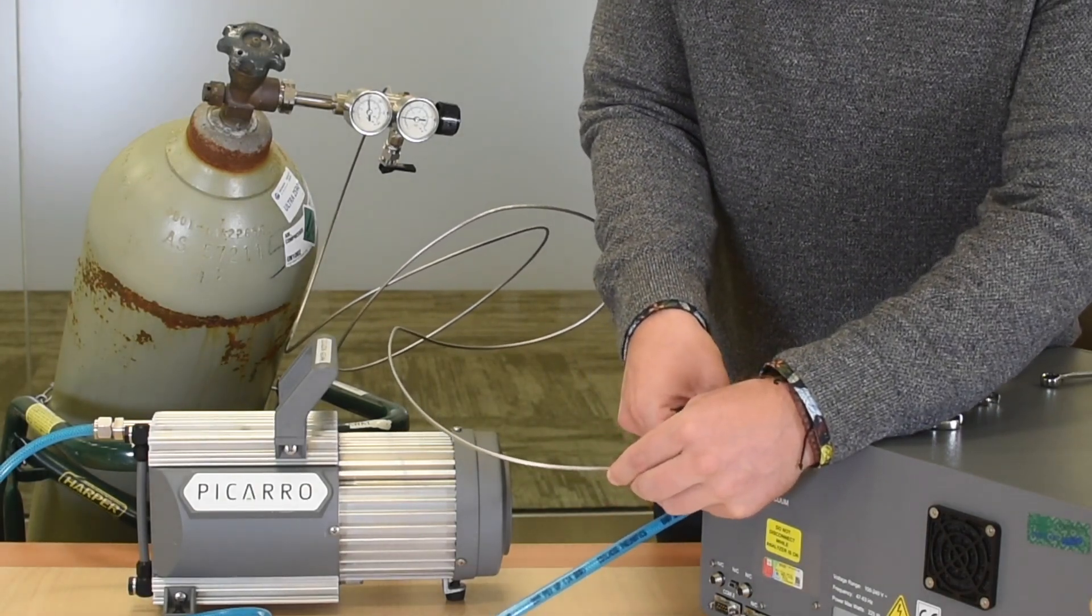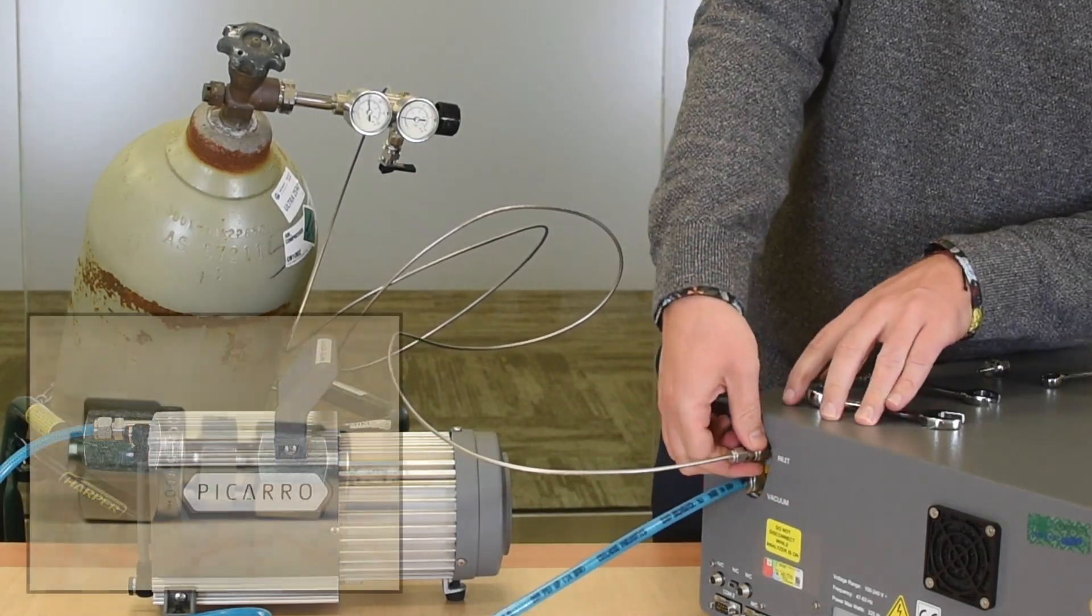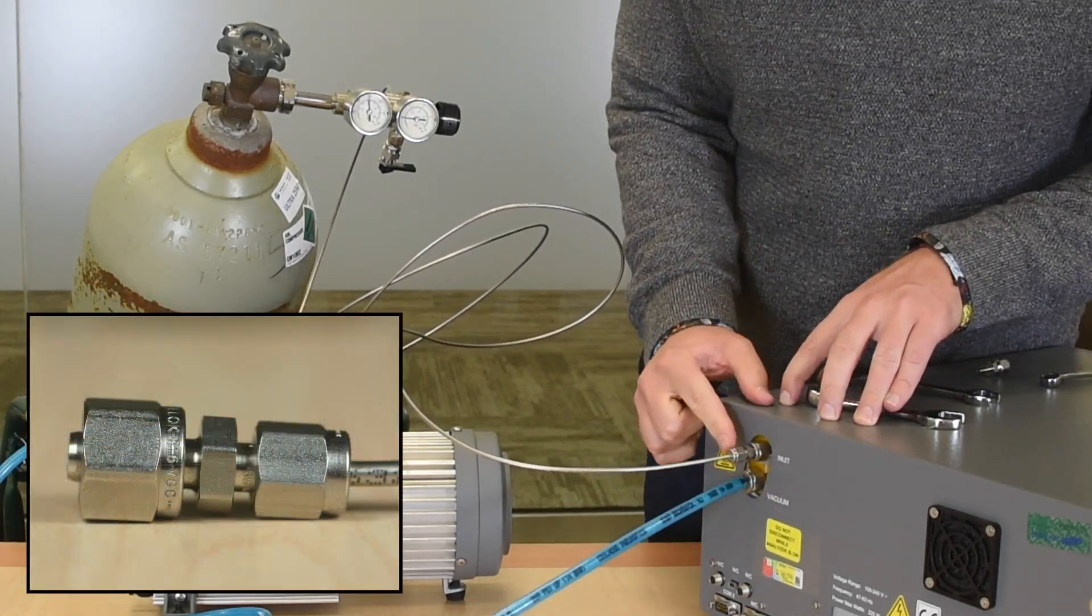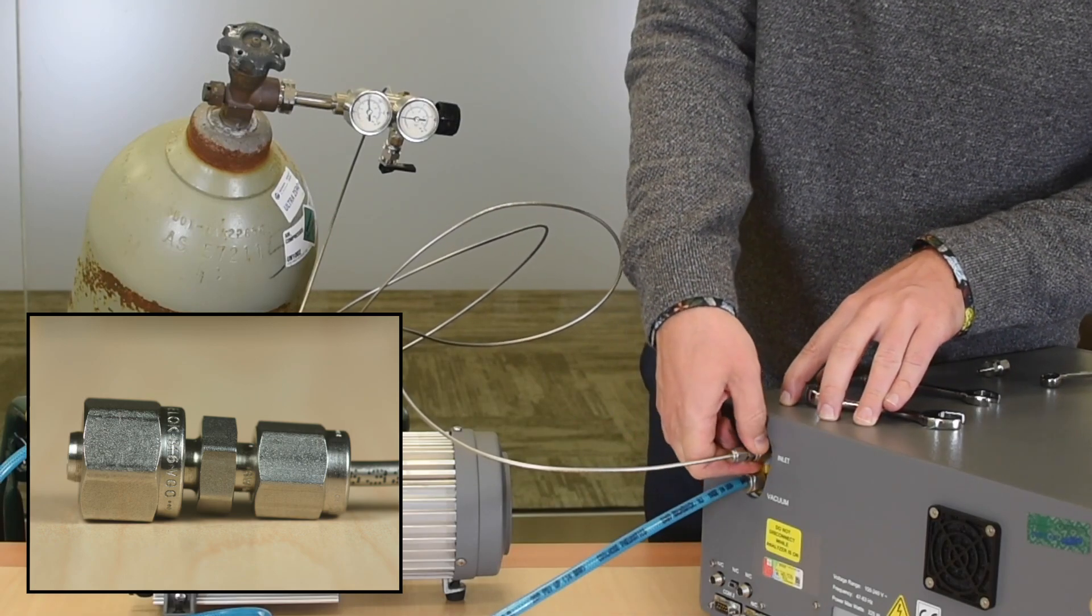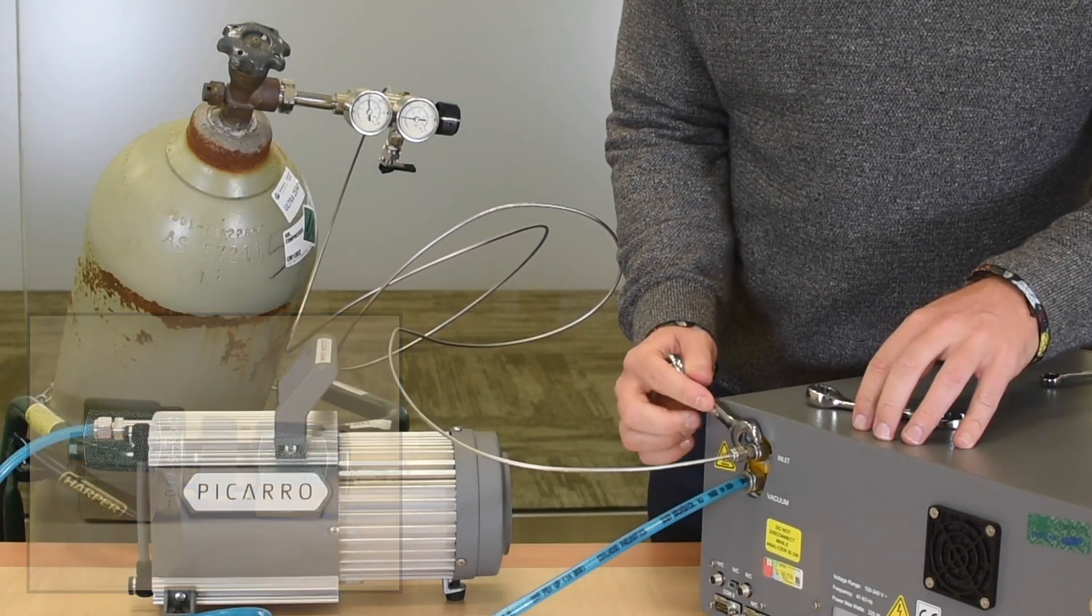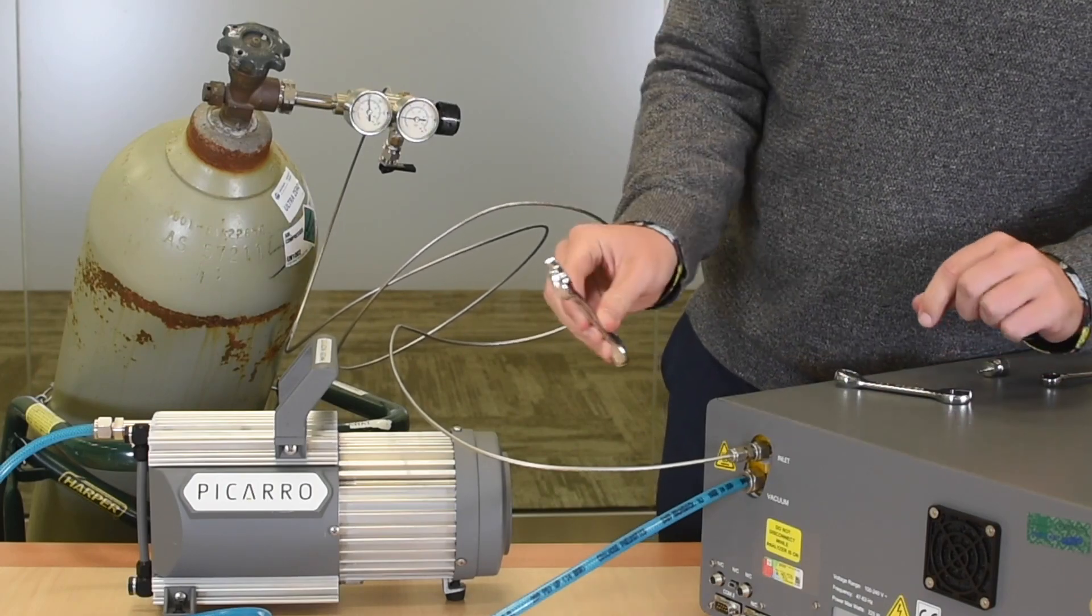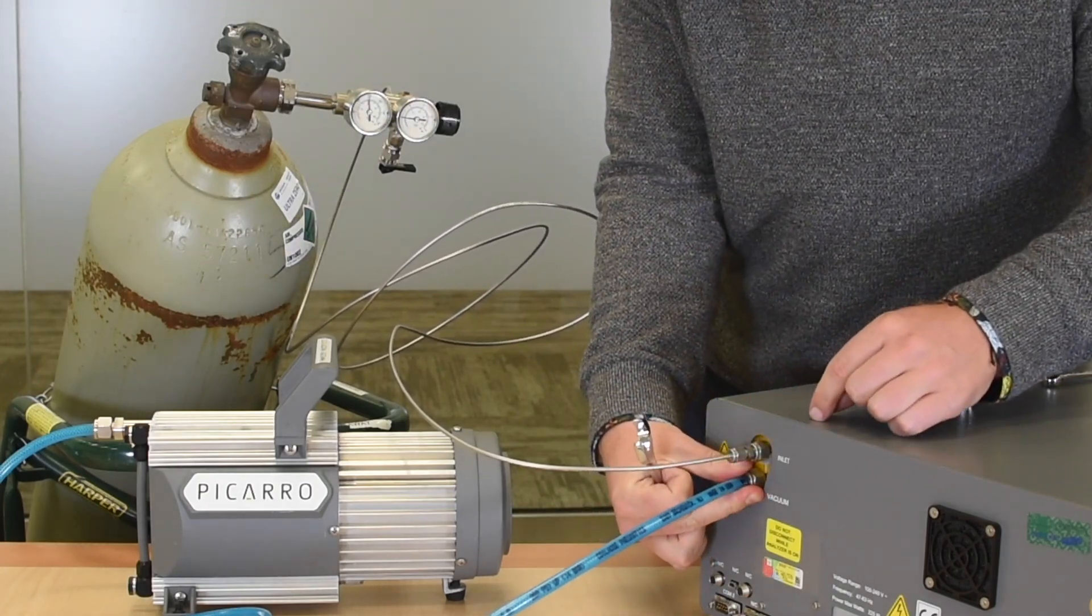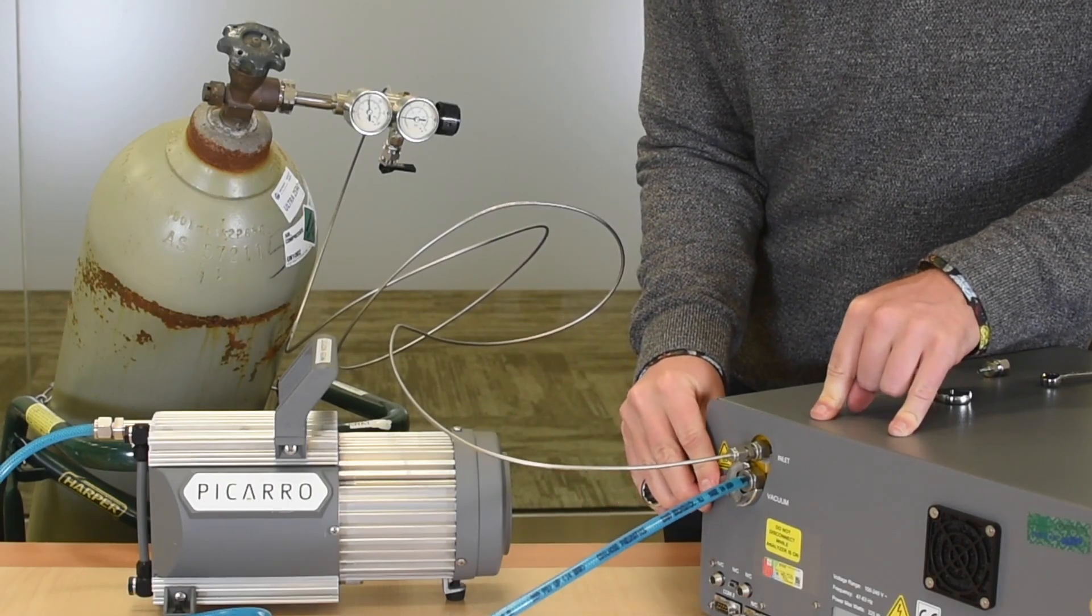Finger tighten it first. You'll see that there's a union on here, which is an adapter to take you from an 1/8 inch thread to a 1/4 inch nut. Tighten it up with a 9/16 wrench. And with an 11/16 wrench, connect up this tubing from the pump and tighten that up.